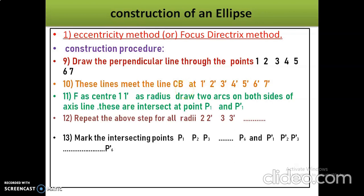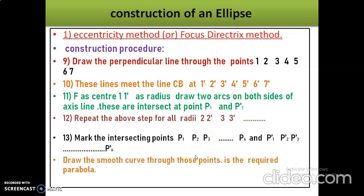So we get intersecting points P1, P2, P3, P4, P5, P6 and P1', P2', P3', P4', P5', P6'. Draw a smooth curve through these points. That is the required parabola.